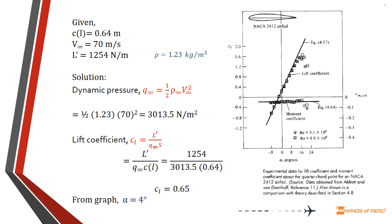To find the angle of attack we must know the dynamic pressure. Dynamic pressure is the increase in a moving fluid's pressure over its static value due to motion. It is defined by Q∞ = ½ ρ∞ V∞². Where V∞ is the freestream velocity and ρ∞ is the sea level density. The standard sea level density is 1.23 kilogram per meter cube. Substituting ρ∞ and V∞ values and solving, the dynamic pressure is 3013.5 newton per meter square.